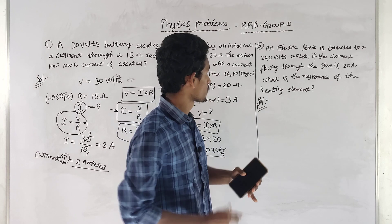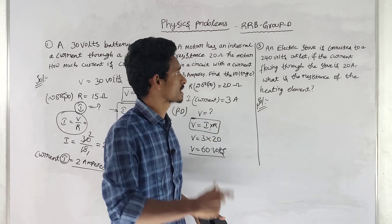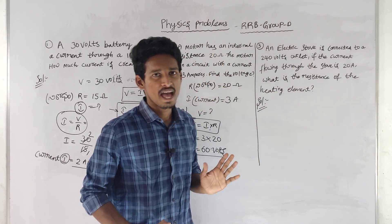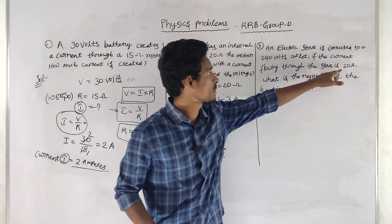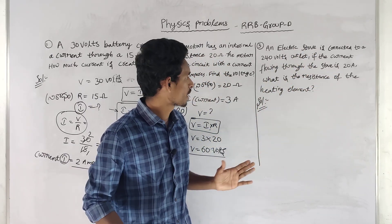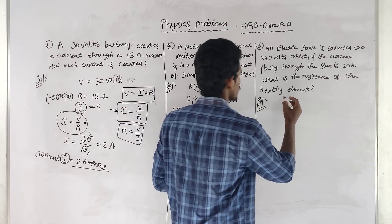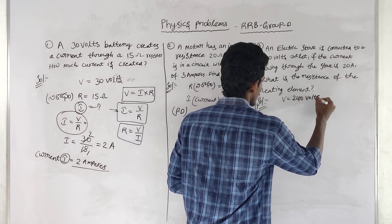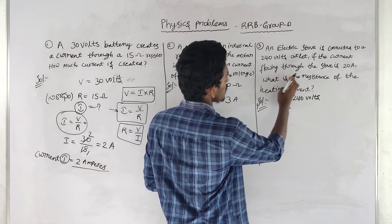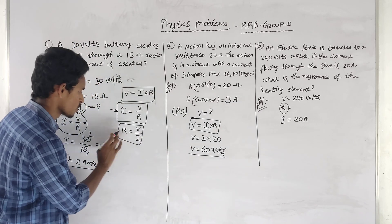An electric stove is connected to 240 volts. That means the voltage, the potential difference, is 240V. The current flowing through the stove is 20 amperes. What is the resistance of the heating element?